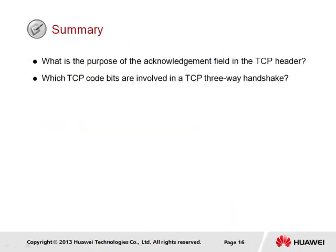In summary of this section on transport layer protocols, the acknowledgement field in the TCP header enables the segment received by the TCP process to be confirmed, effectively enabling reliability of transmissions since any packets not acknowledged can be resent. Regarding the TCP three-way handshake, the SYN and ACK code bits are used to establish the connection between a specific application or service of both the sender and receiver, following which IP packets can be forwarded between the end stations to support application-to-application transport of data.